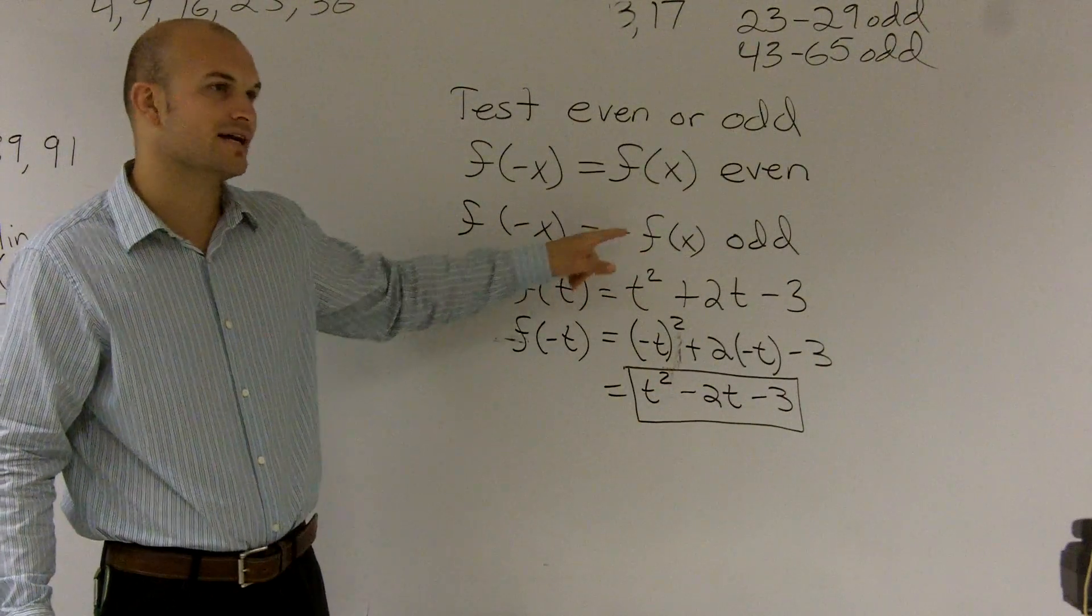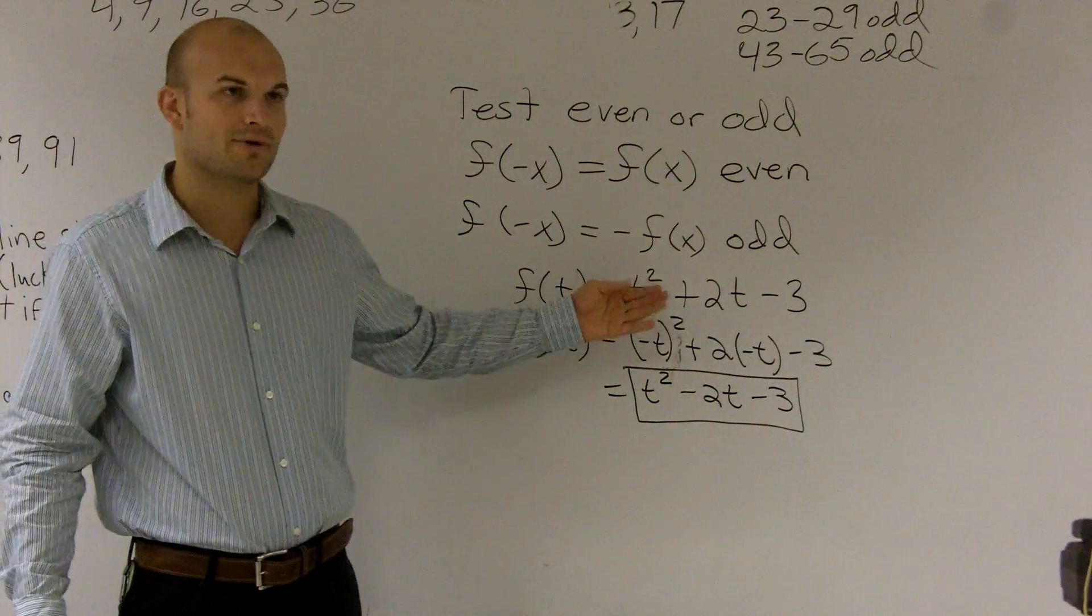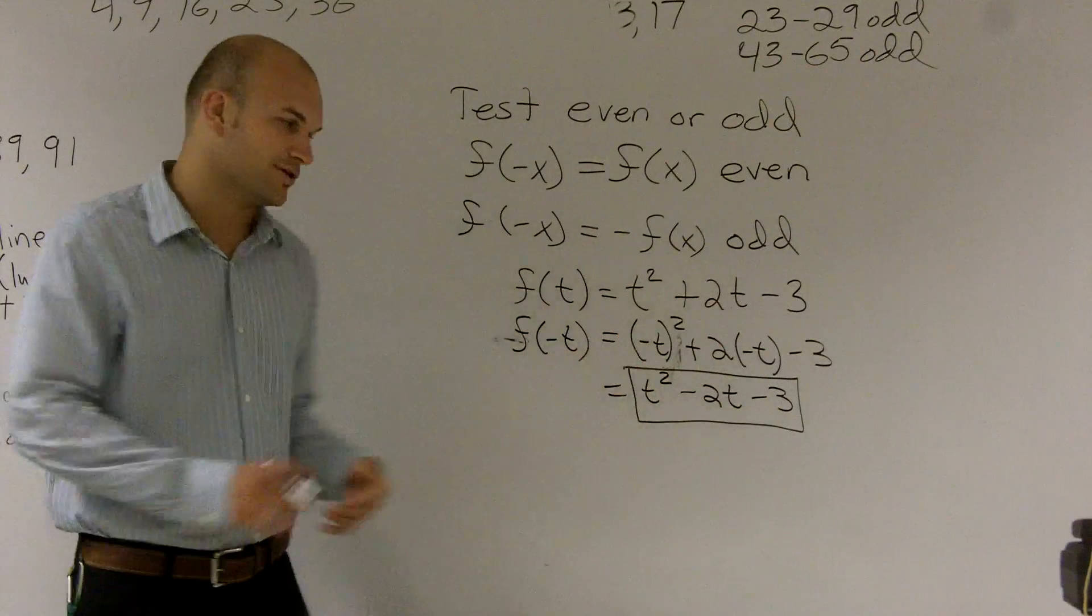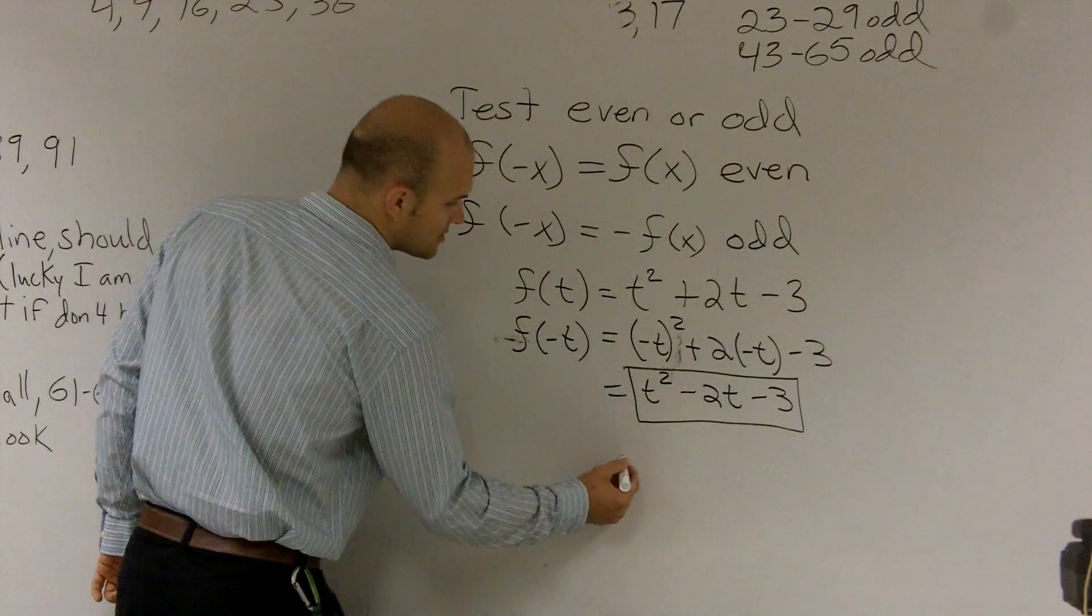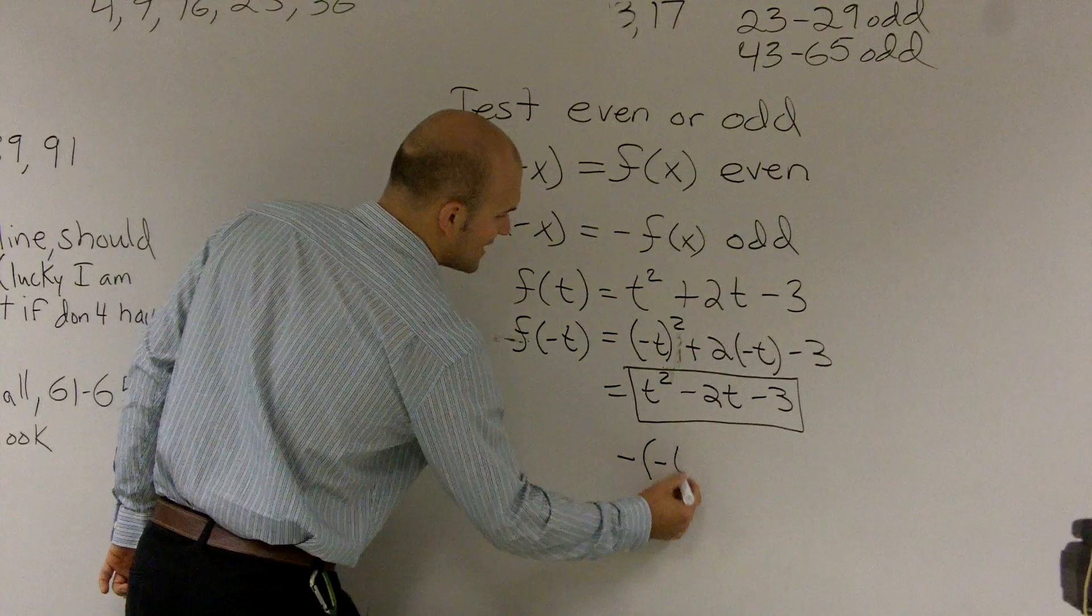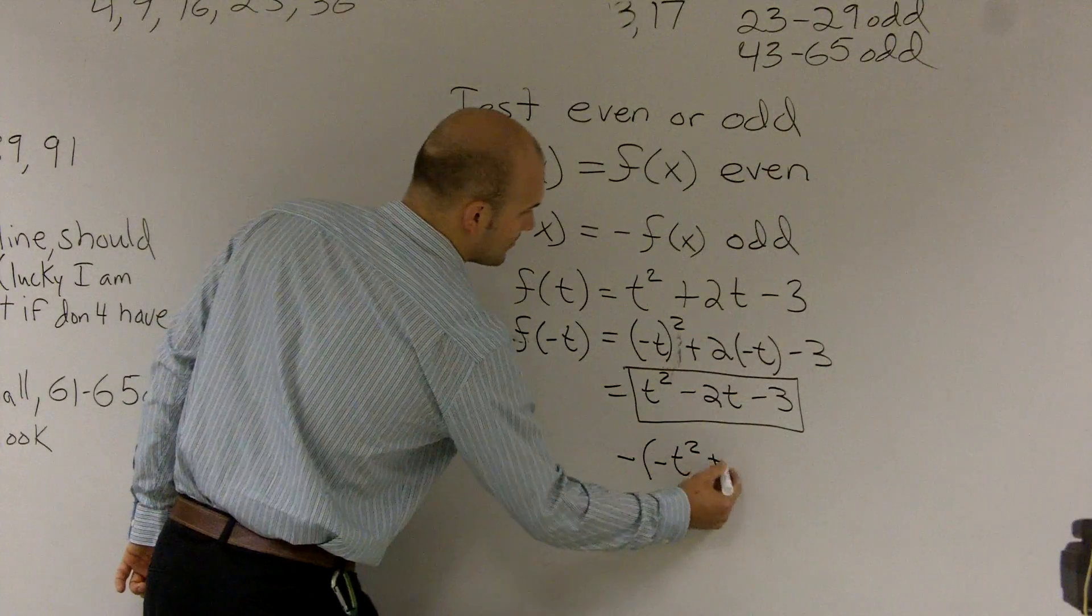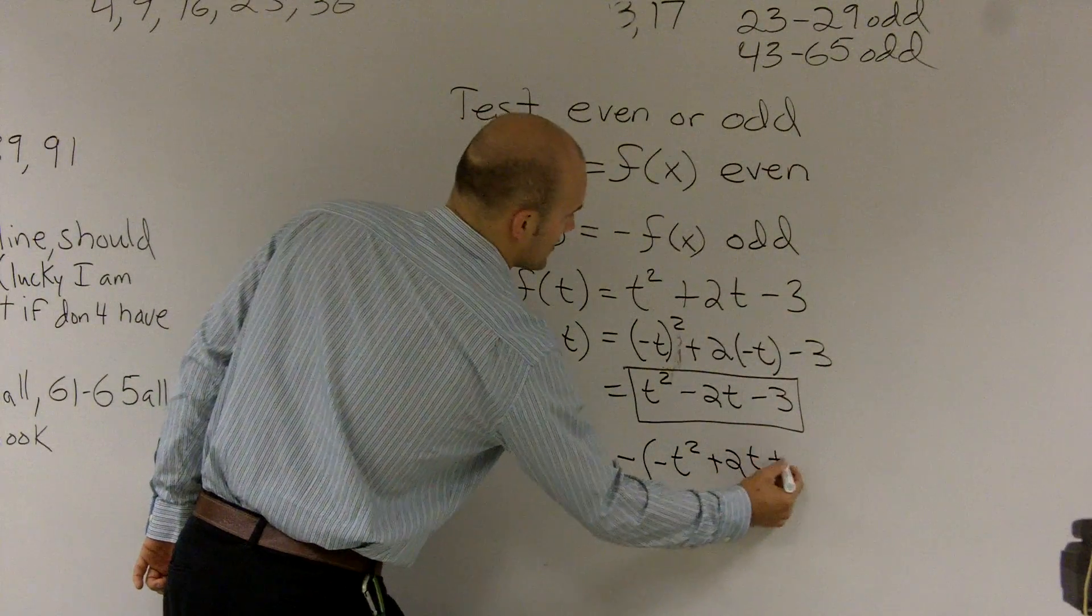Now, is this the same as the negative of my function? Well, one way to help you out is if you factor out a negative sign, you can go and get that. So let's factor out a negative 1. So when I factor out a negative 1, I'm left with a negative t squared plus 2t plus 3.